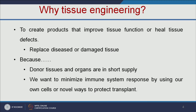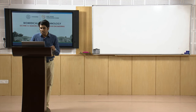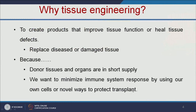Why do we need tissue engineering? To replace the diseased or damaged tissue. Because the donor tissues and organs are short in supply — we do not have sufficient donors for replacing the damaged tissues or organs. Also, if we take the organs from a different person or different animal, our immune system will reject it. So, to minimize the immune system response, we can use our own cells.